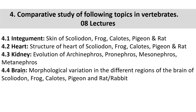This is just to introduce you about the syllabus. The fourth point is the morphological variation in different regions of the brain of Scoliodon, Frog, Calotes, Pigeon and Rat. The same representative examples are given. Morphological variations - whether they have cerebral hemispheres or not, how their olfactory organs and olfactory lobes and nerves differ - because they differ in terms of these structures and features. We will learn that also.